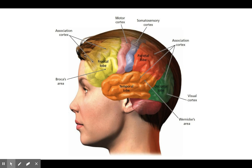The frontal lobe deals with more complex processes. We have the parietal lobe, which helps with things more like functioning and movement. We have our occipital lobe back here, which deals with vision. So we're going to get into the different cortexes and what's going on in these different cortexes.